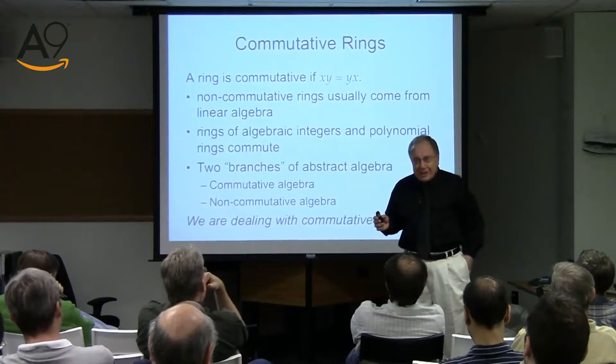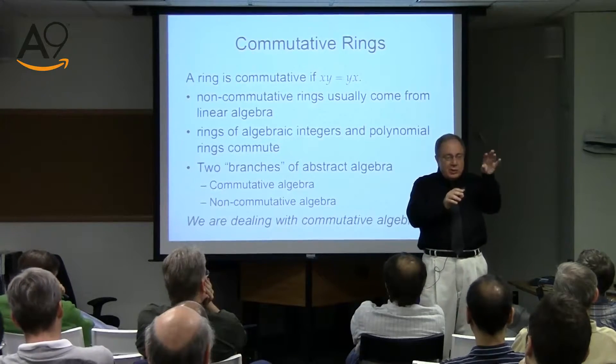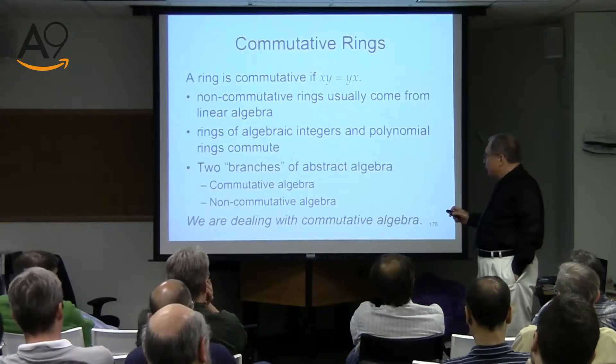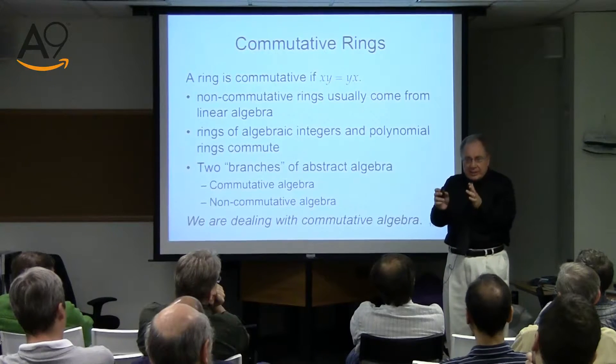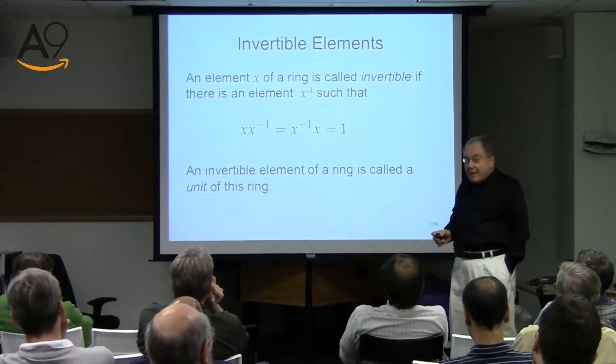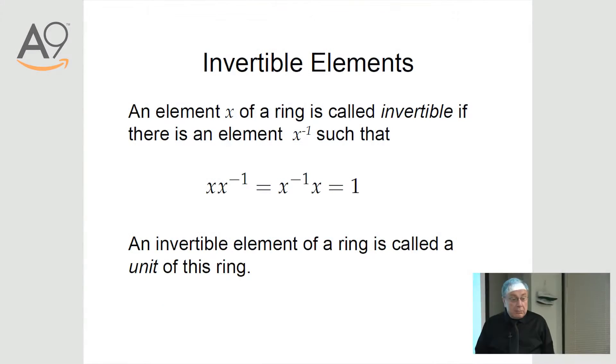From this point on in this course we will be dealing with commutative rings — so when I say 'ring' I mean commutative ring. This is a very typical thing in mathematics: you define things and then narrow down. We will be doing commutative algebra — not because non-commutative algebra isn't exciting, it is, but because for this particular journey we need just commutative structure.